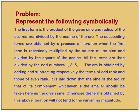Madhava is trying to give a series expansion for a trigonometric term. The statement says: the first term is a product of the given sine and the radius of the desired arc divided by the cosine of the arc. Succeeding terms are obtained by repeatedly multiplying by the square of the sine and dividing by the square of the cosine. All terms are then divided by the odd numbers 1, 3, 5, and so on. The arc is obtained by adding and subtracting respectively terms of odd and even rank.